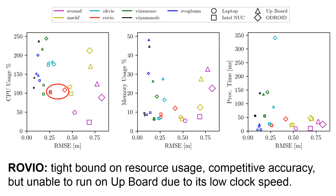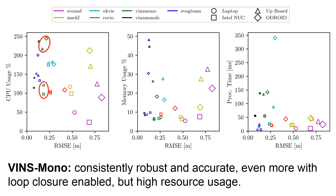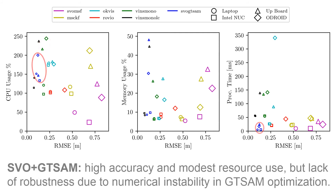Rovio provided competitive accuracy with a tight bound on resource usage, but was unable to run on the UpBoard due to its low processor clock speed. VINS-Mono was consistently robust and accurate across all sequences, even more so with loop closure enabled, but required high resource usage. SVO plus GTSAM gave very high accuracy with modest resource usage, but showed a lack of robustness due to numerical instabilities in the GTSAM optimization.